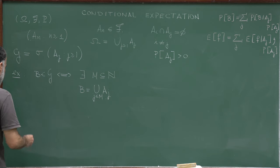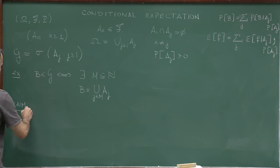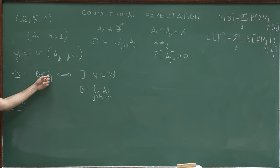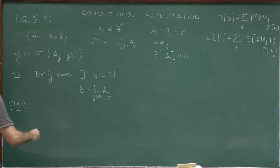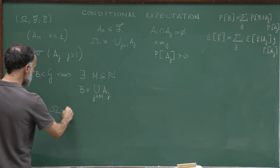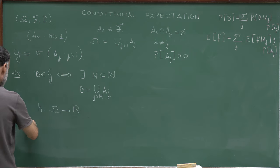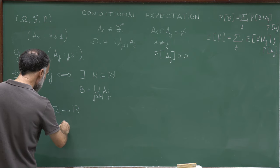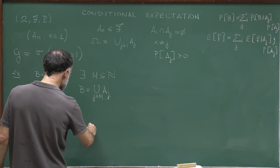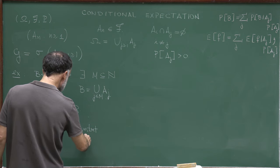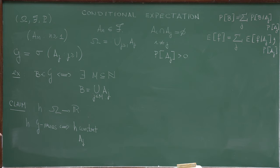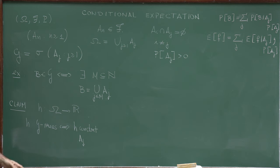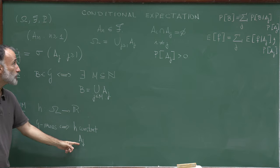Now I want a characterization of G-measurable functions. I claim that a function h from omega to R is G-measurable if and only if h is constant on each set A_j. I will prove both directions of this equivalence.